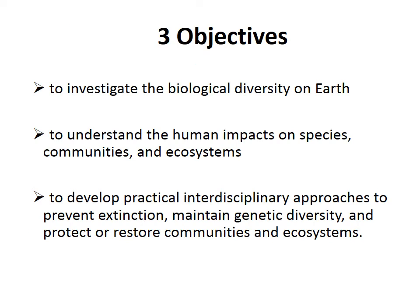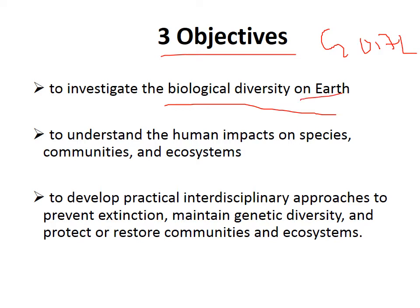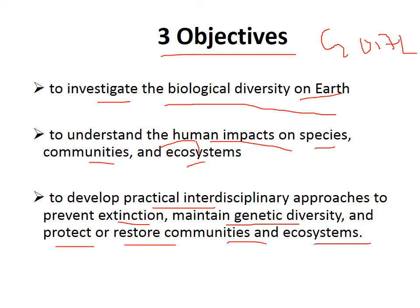There are three main goals of conservation biology. First, to investigate biological diversity on Earth and understand it. Second, to understand the human impact on species, communities, and ecosystems. Third, to develop a practical interdisciplinary approach to prevent extinction, maintain genetic diversity, and restore or protect communities along with ecosystems.